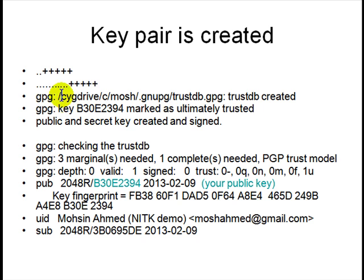GPG will say it's been saved — this is a Cygwin version — in your home directory under .gnupg, and a trusteddb.gpg database is created. This is the key it created; it gives it an ID number, and it is trusted because you created it. The idea is that all these keys are in your database on your machine, and your key is ultimately trusted because you created it.